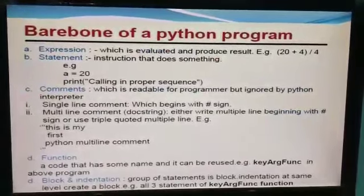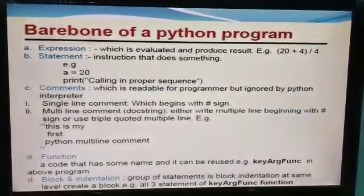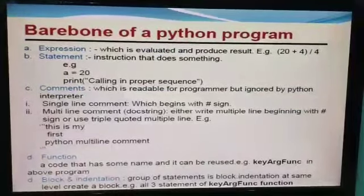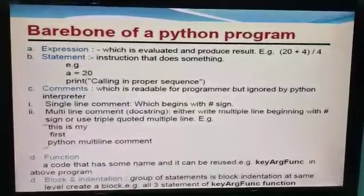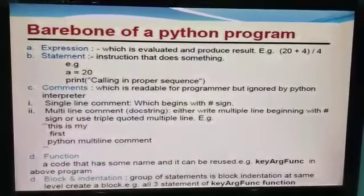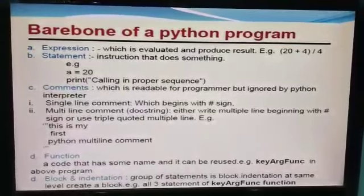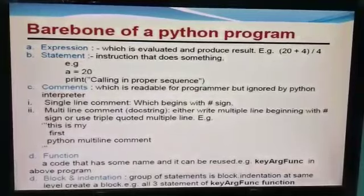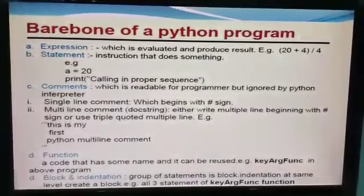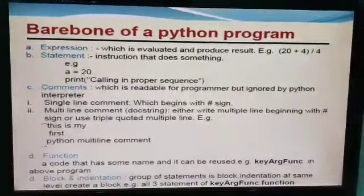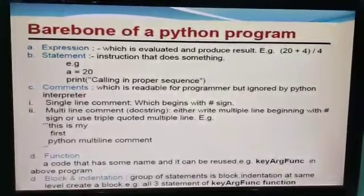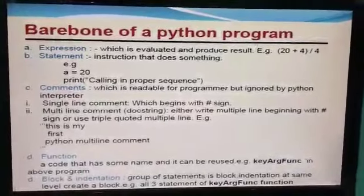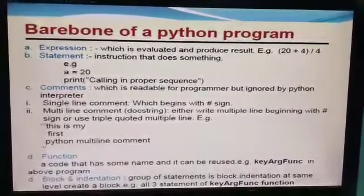Expressions are evaluated and produce results. For example, here you can see 20 plus 4, and then divide by 4. I have to add 20 and 4, and then divide the answer by 4. It means after evaluating, a result can be produced. This is called an expression.